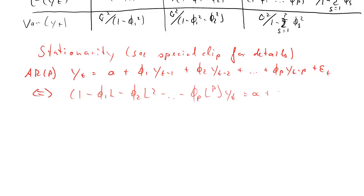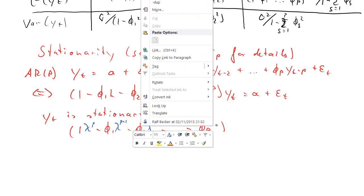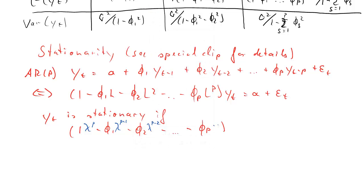And for the stationarity, we realized it was best to write it down in this lag operator notation, and then it turned out that y_t was stationary if that polynomial, which we derived from the lag polynomial up there, but replacing the lag operators with the lambdas, but with powers which were in the reverse order to the Ls. Again, look at the special clip on AR stationarity.